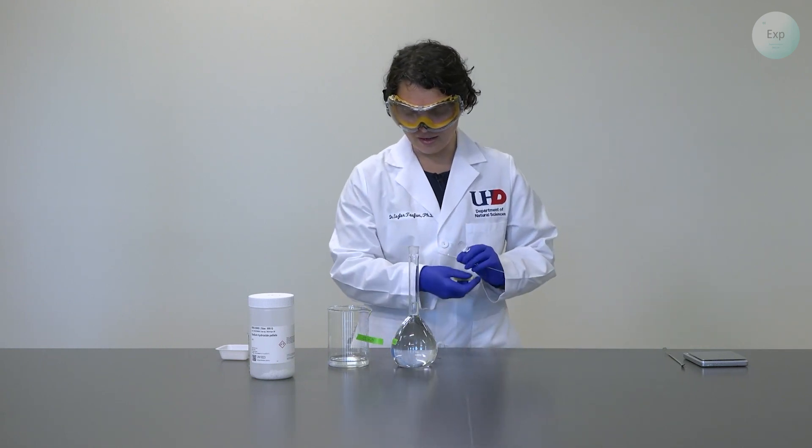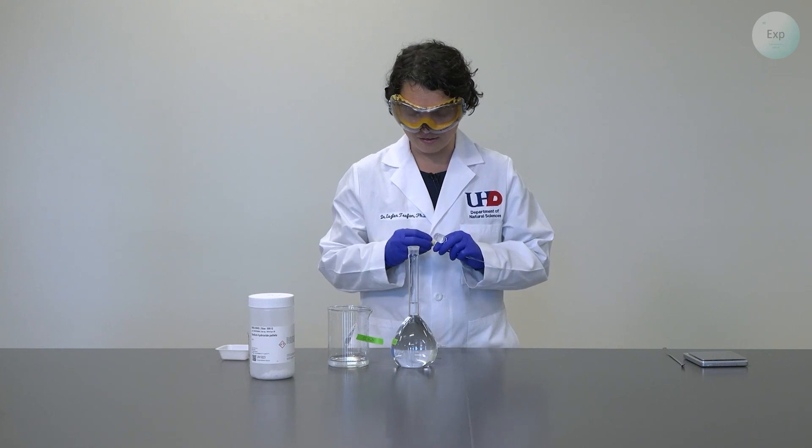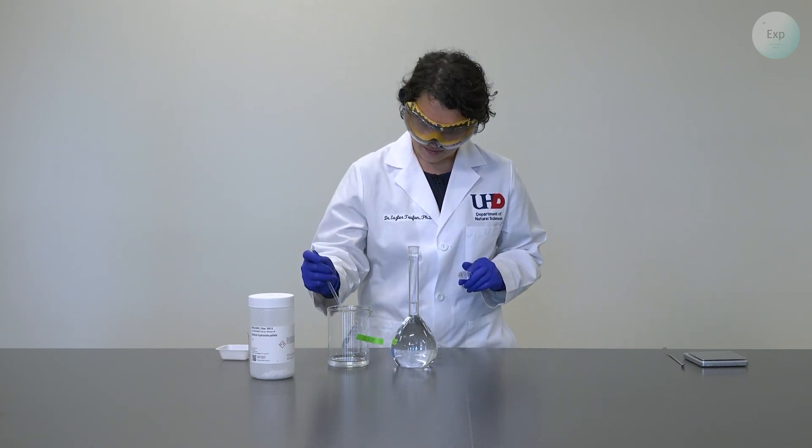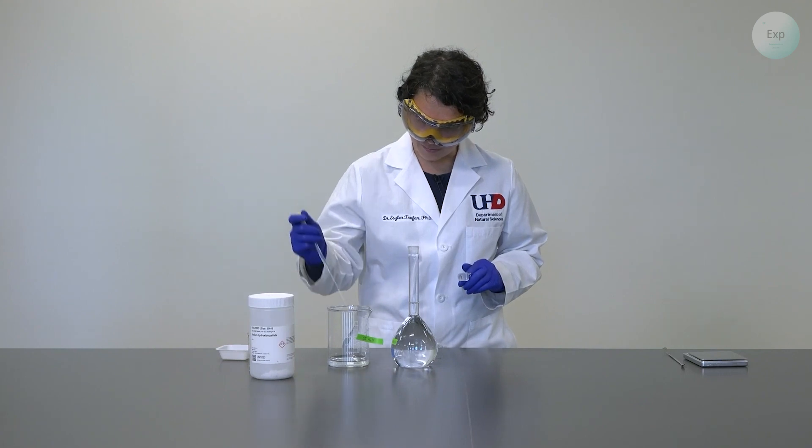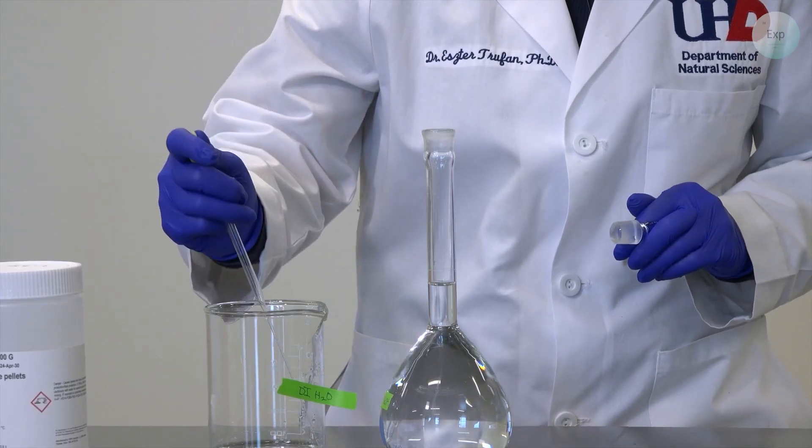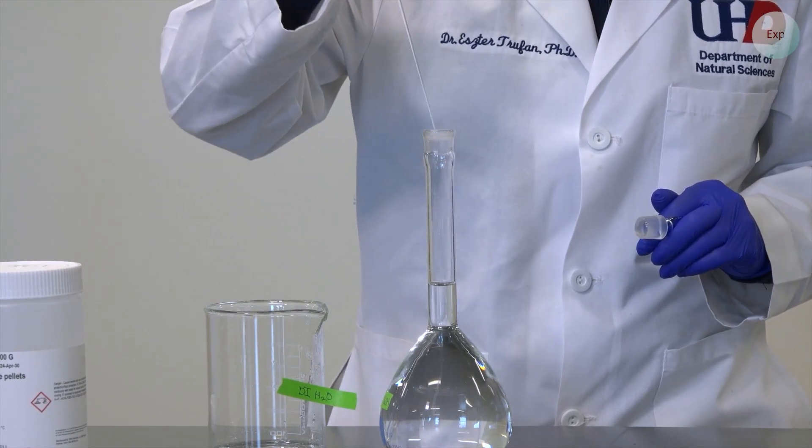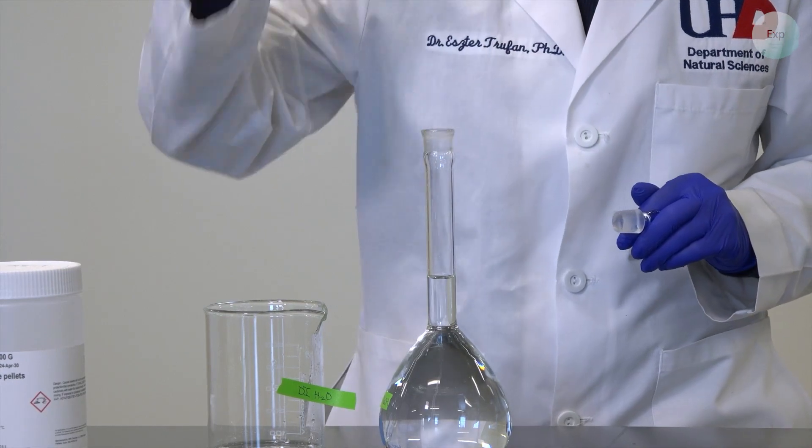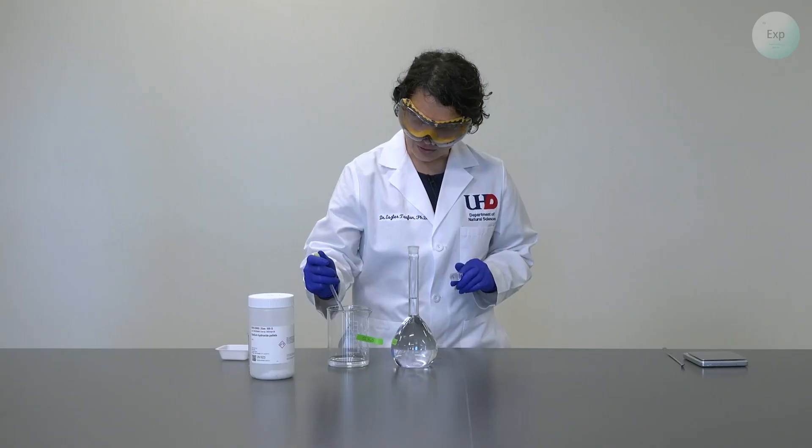And now we are approaching the neck of the flask and approaching the mark on that neck. So at this point, I'm not sure if I can accurately add the right amount of deionized water. So I will switch to a pipette, extract some deionized water from the beaker, and then transfer it into the volumetric flask. Once I get really close to the mark, I will lower myself to eye level and make sure that the meniscus of the solution is exactly at the mark.